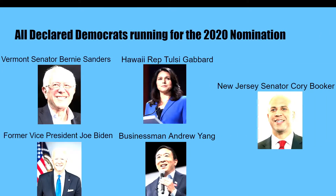Now we have the Democrats who are running. We have Vermont Senator Bernie Sanders. He lost to Hillary Clinton in 2016 for the nomination in our timeline as well. He's back at it again, trying to promote socialism and government-free health care. We also have the former Vice President Joe Biden. Obama decided he wasn't going to run to try to challenge Ron Paul in 2016, and Biden was going to run but delayed it until 2020 due to his son's death. He is back with a vengeance.